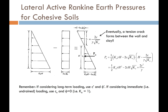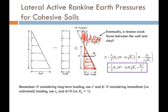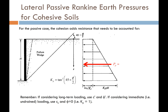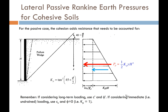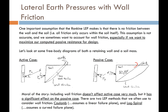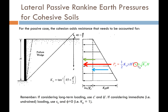What we typically do as engineers is neglect the entire tension zone — we just pretend it doesn't exist and only analyze the load below it pushing the wall over. We compute the equivalent force from that load using the equations on the right. For passive pressure, it's the same idea using Rankine theory, except instead of subtracting the cohesion component we add it — the only difference is an addition sign instead of a subtraction sign.